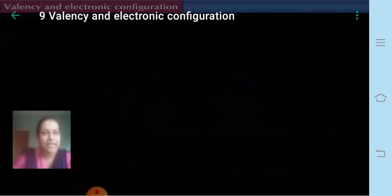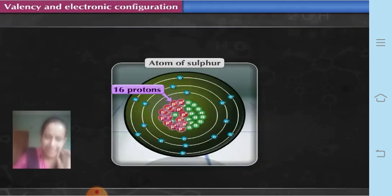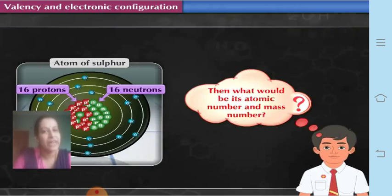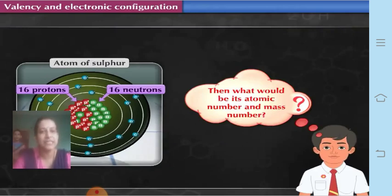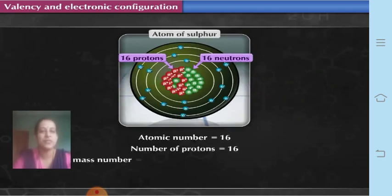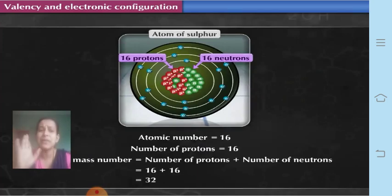The last question of this topic: sulfur contains 16 protons and 16 neutrons. What would be its atomic number and atomic mass number? The number of protons gives us the atomic number — so atomic number is 16. The atomic mass number is number of protons plus number of neutrons: 16 plus 16 equals 32.